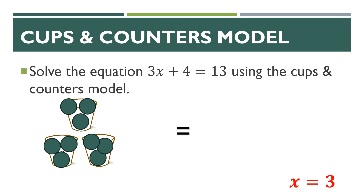I like the cups and counters model — it is more accessible because you can easily cut this out of paper, laminate it, and give it to your students. The pan balance model is harder for students to visualize because they're not actually seeing the scale go out of balance if they remove the wrong amount. The cups and counters model is more accessible: you as the teacher could print it out and laminate it, or go to the store and get a bunch of cups and use little bingo counters.